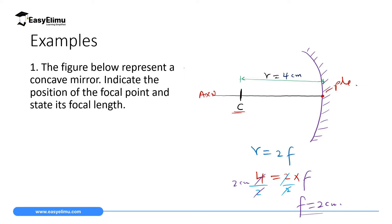The focal length is the distance from the pole to the focal point, so to find the focal point we measure 2 centimeters from the pole. Since the distance from the center of curvature to the pole is 4 centimeters, 2 centimeters is exactly half of that distance. So we measure half of this distance and that point is our focal point F. The focal length is therefore f equals 2 centimeters.